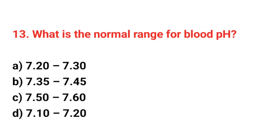Question number 13: What is the normal range for blood pH? The right answer is option B: 7.35 up to 7.45.